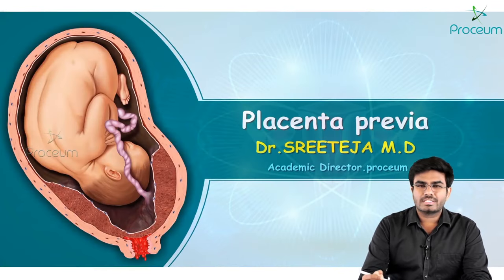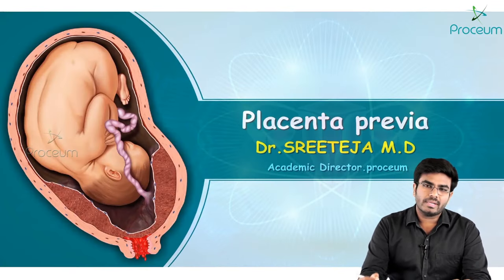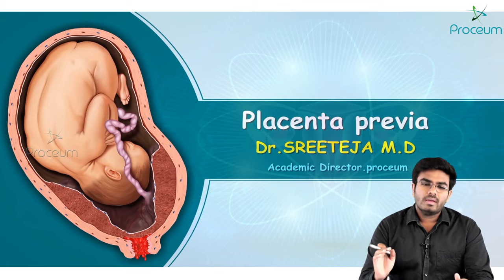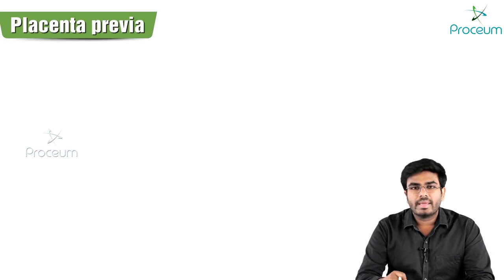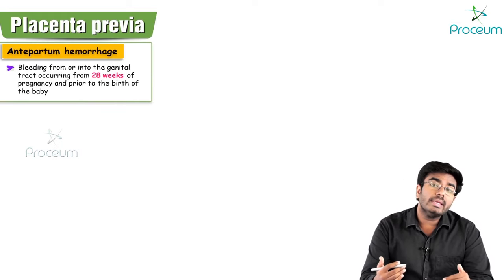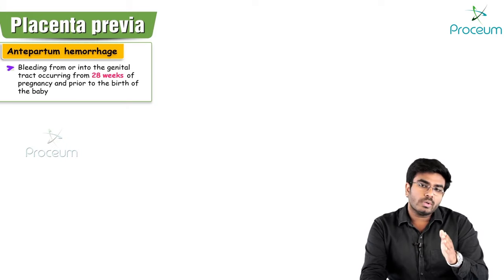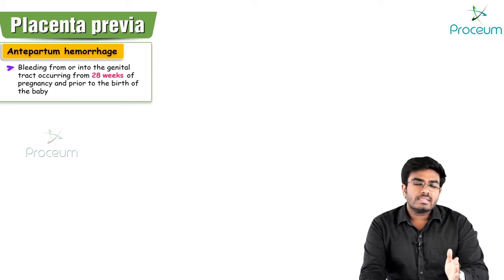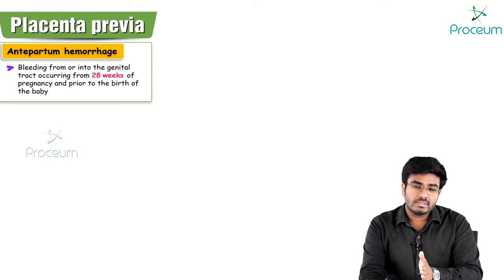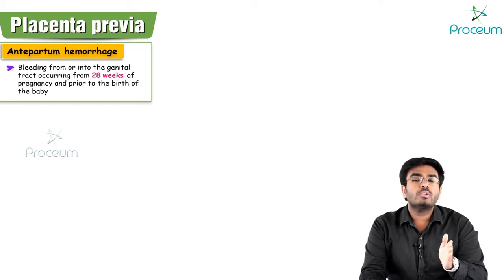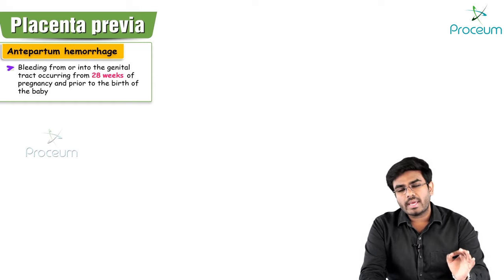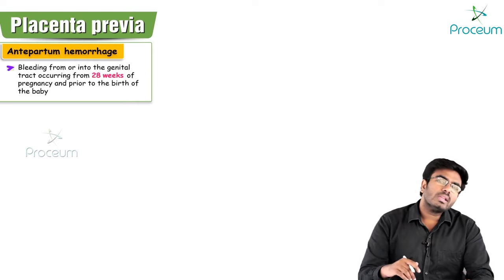Welcome back. In this video, let's discuss antepartum hemorrhage, specifically the subtopic of placenta previa. The definition of antepartum hemorrhage is bleeding from or into the genital tract after 28 weeks of gestation — that is, after the period of viability — up to the time of birth.